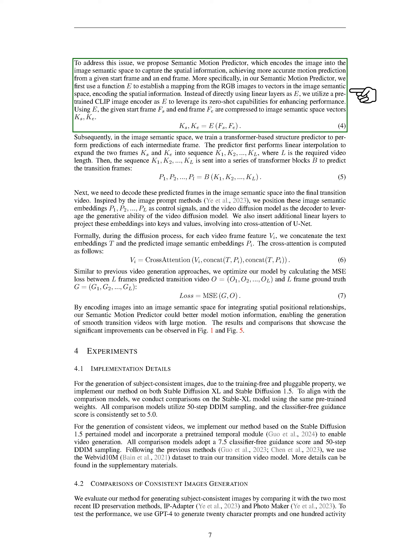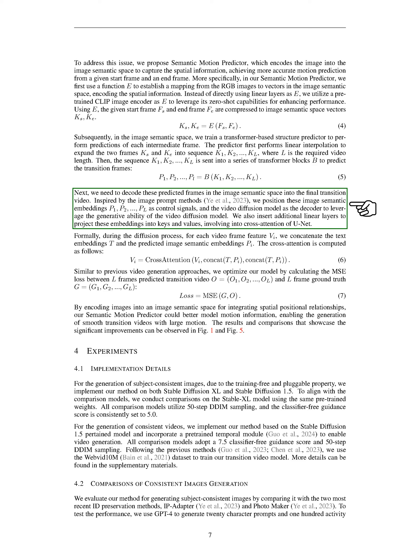Next, we decode these predicted frames from the image semantic space into the final transition video. We position the image semantic embeddings P_1, P_2, ..., P_L as control signals inspired by image prompt methods. We use a video diffusion model as the decoder and include additional linear layers to project these embeddings into keys and values for cross-attention in U-Net. During the diffusion process, each video frame feature V_I is concatenated with the text embeddings T and the predicted image semantic embeddings P_I for cross-attention computation.